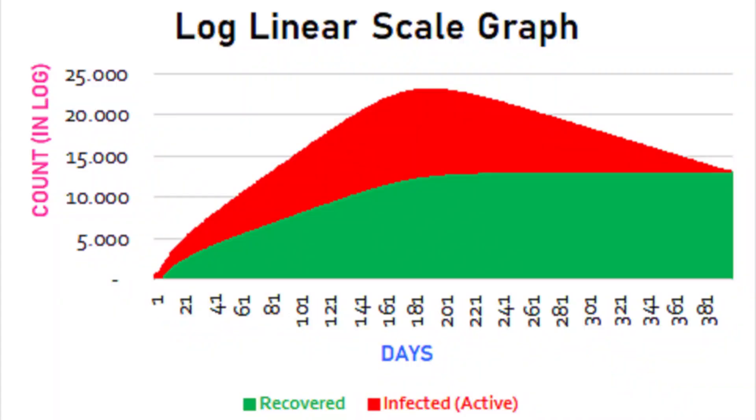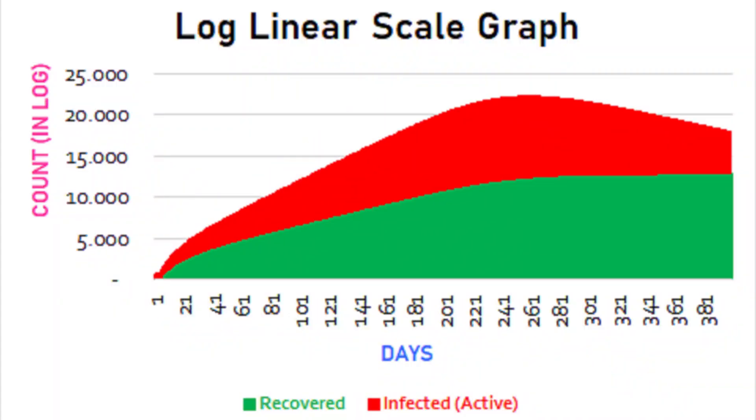Let's see what happens if there's a lockdown in the city. The infection rate decreases and we get a flattened graph where the number of infections are less. Further, if there are better testing protocols, the recovery rate increases and the graph further flattens, potentially ending the pandemic early.